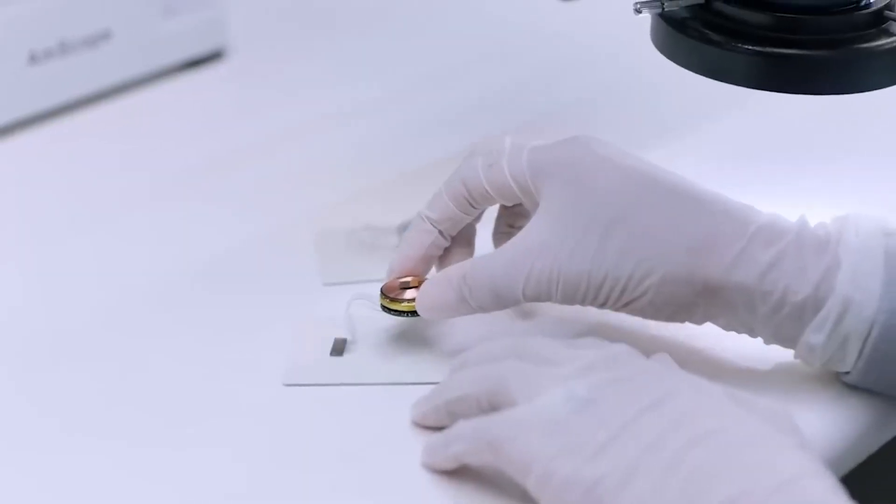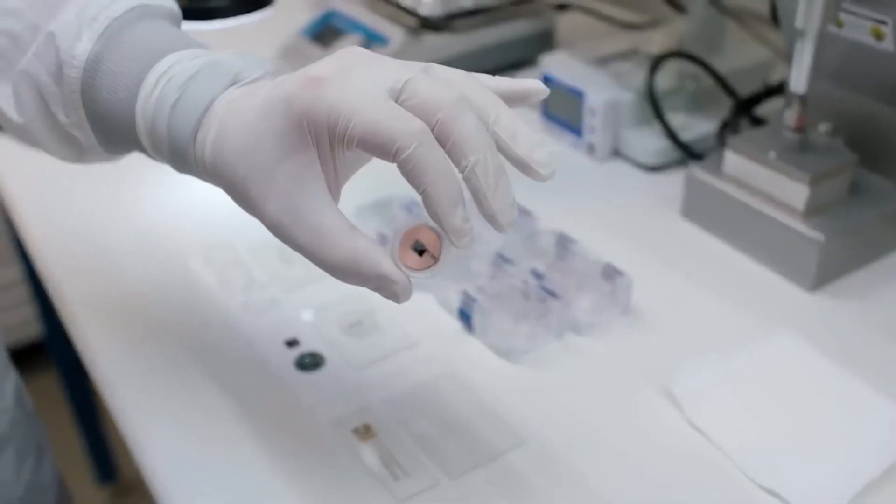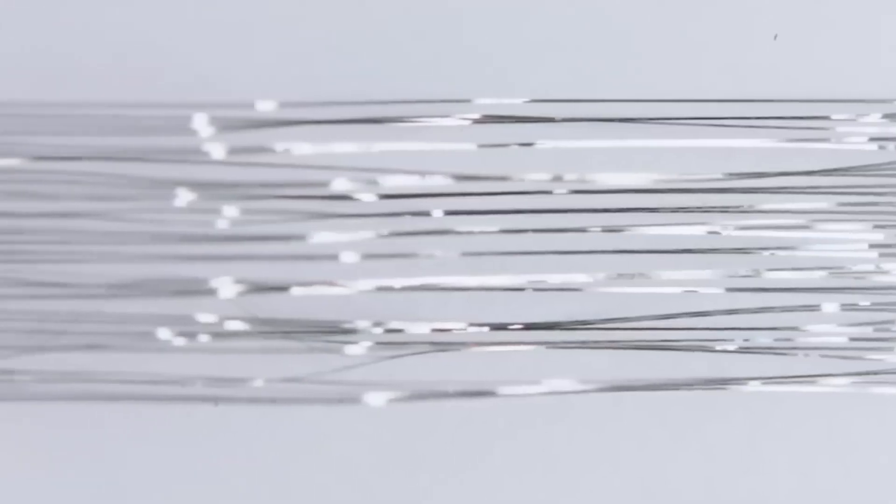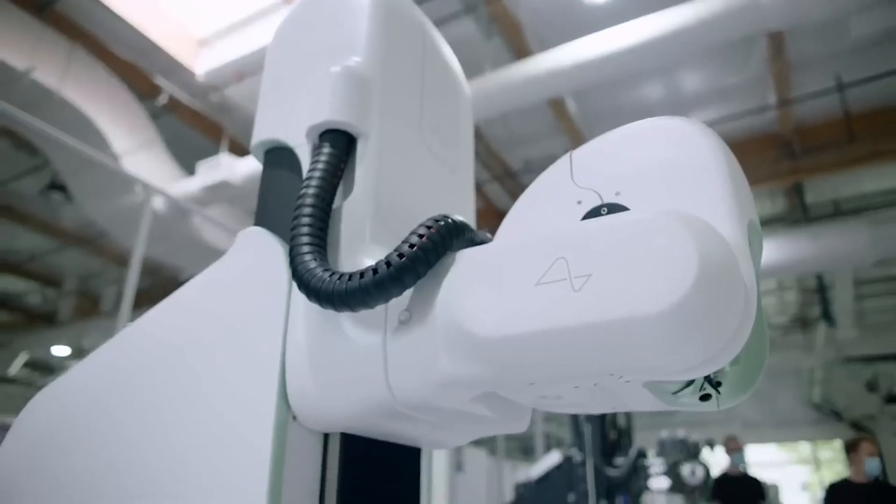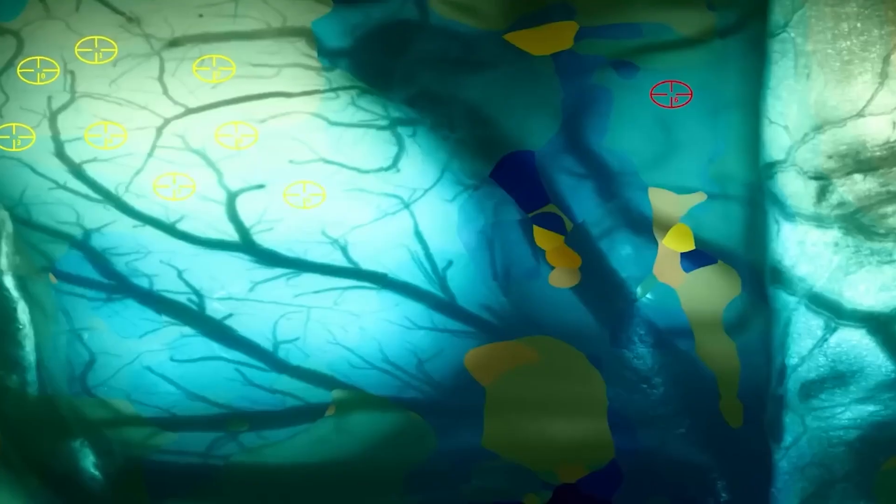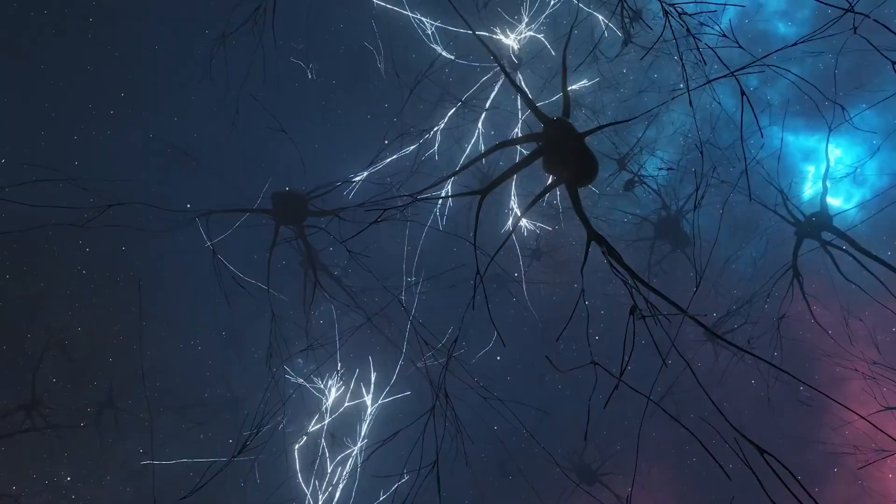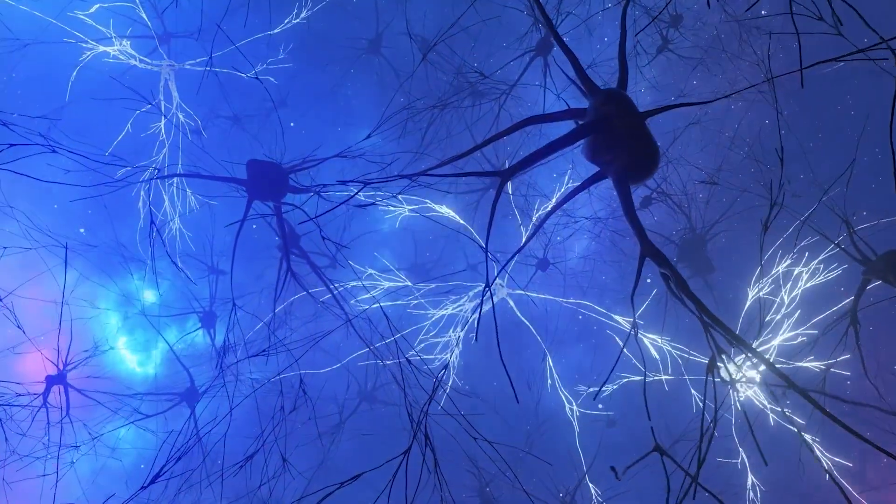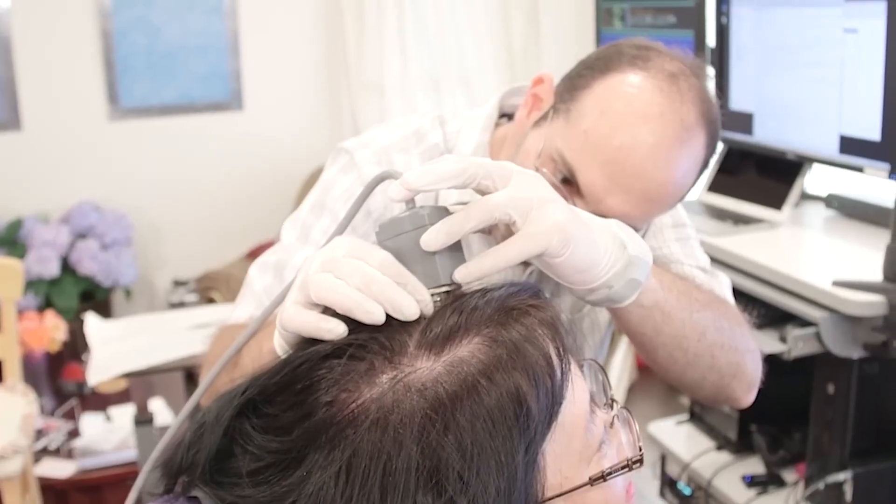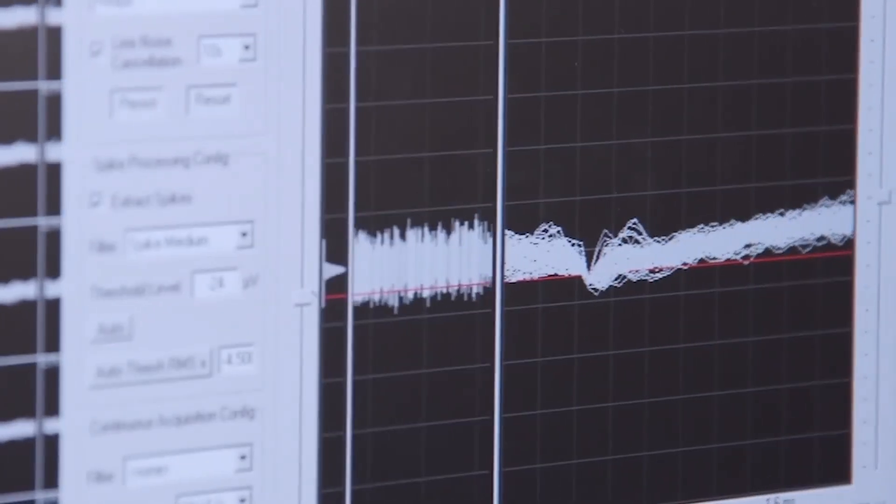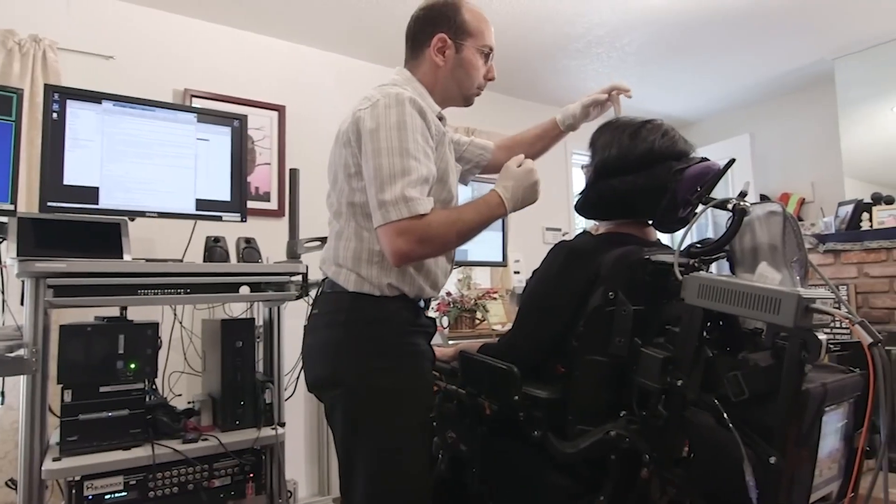Undeterred by this initial setback, Arbaugh continued to embrace the potential of his neural implant. He affectionately named his device Eve and embarked on a journey of intellectual exploration. Leveraging the power of his thoughts, he began learning new languages, including French and Japanese, and delved into subjects like mathematics and the intricacies of the Bible.